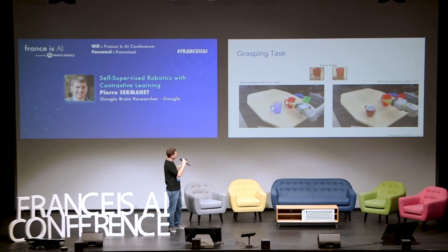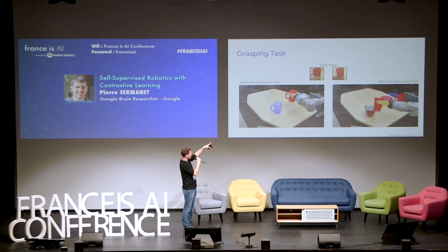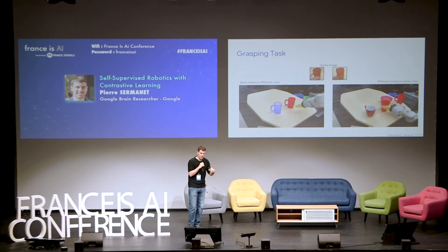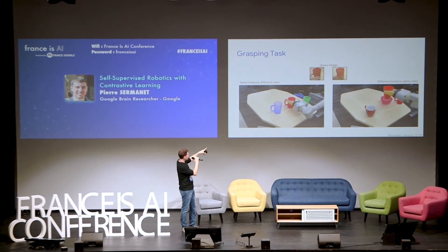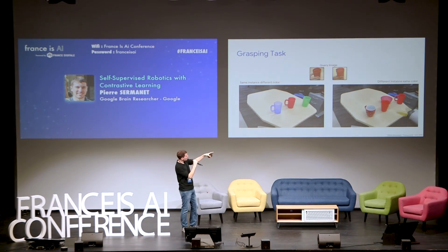Another task is a grasping task, where the robot is shown an object not on the table and has to pick up the object it thinks is most similar. On the left, we have objects of the same shape but different colors — it picks the one with the same color. On the right, we have objects of the same color but different shapes — and it picks the right shape.